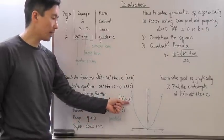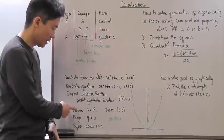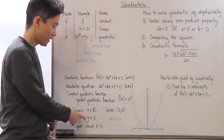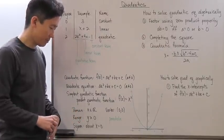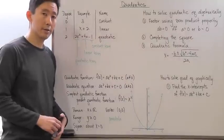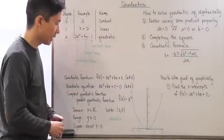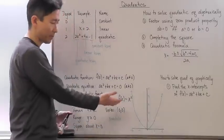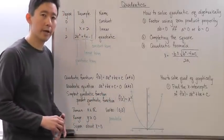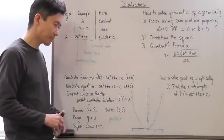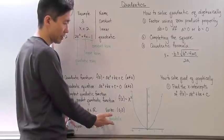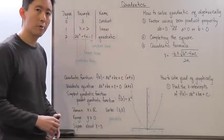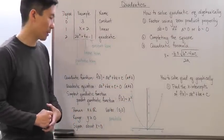If we analyze this parent function, notice that the domain is x is an element of all reals. The range is y greater than or equal to 0. It's symmetrical about x equals 0, in this case the y-axis. It has a vertex at (0, 0), which in this case is going to be the minimum value of the function. And all quadratic functions are going to be graphs of what are called parabolas or parabola curves.